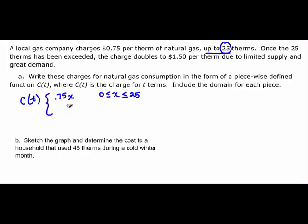So now for the second piece, we know it's going to be $1.50 per therm, so it's 1.50X. But we have to consider that we have all this, we started, so we have to take that out. So if we take 0.75 times the 25, we're going to end up with 18.75. So the most you're going to pay for 25 therms is 18.75. So $1.50 times X minus the 18.75 will be in the domain of X is greater than 25.